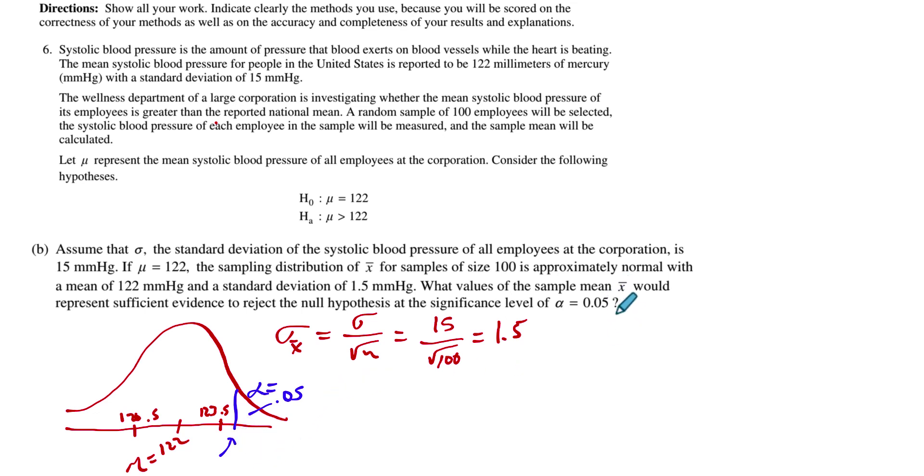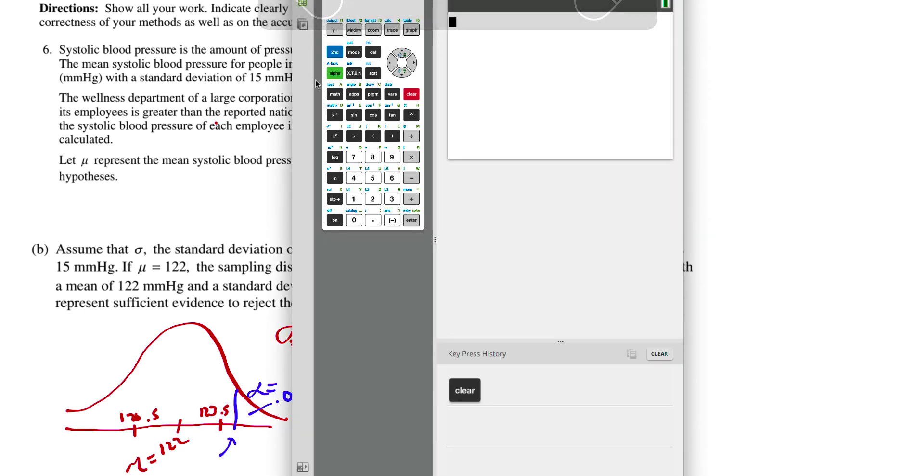First, I'm going to find the z-score because on an AP test, we want to be very clear on everything that we're doing. So first I'll find the z-score, and then I'll just use the calculator and find what value of x-bar. To find the z-score, I'm going to pull up inverse norm.